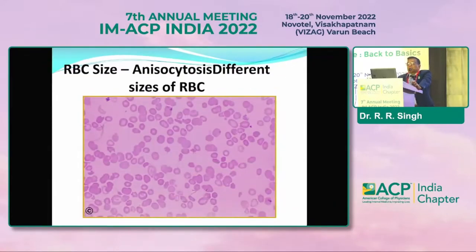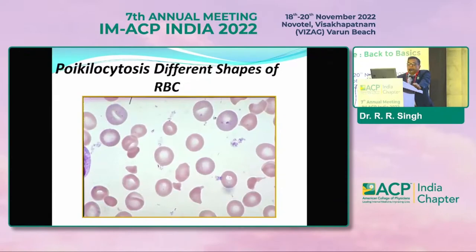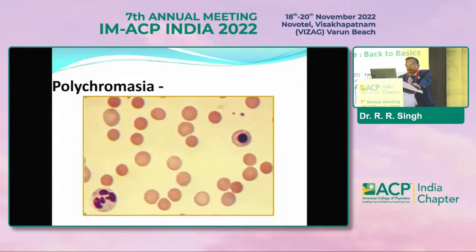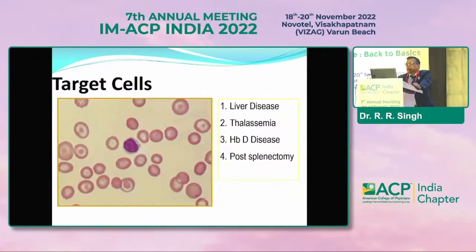When RBC size is different, we call it anisocytosis, where we find RBCs of different sizes. In poikilocytosis, there is a different shape of RBCs. In polychromasia, there is hyperpigmentation — this kind of picture we find in thalassemia, where due to iron overload the RBCs become hyperpigmented. Spherocytosis is seen in liver disease, thalassemia, hemoglobin disease, and post-splenectomy patients.